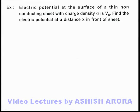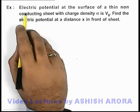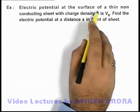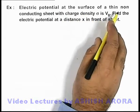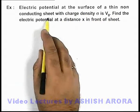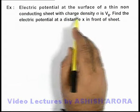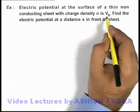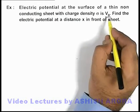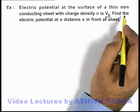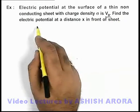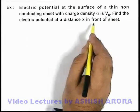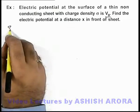In this example, we are given that the electric potential at the surface of a thin non-conducting sheet with charge density sigma is V-not, and we are required to find the electric potential at a distance x in front of this sheet.